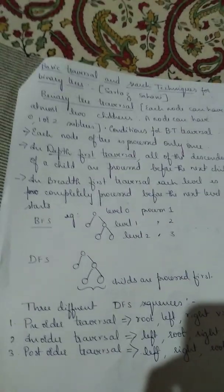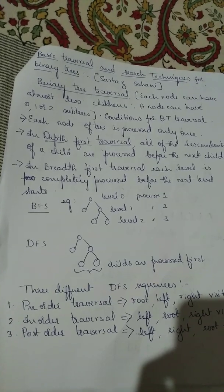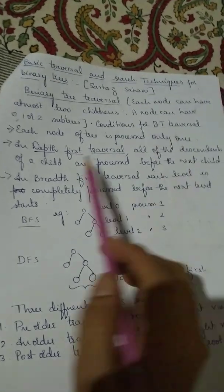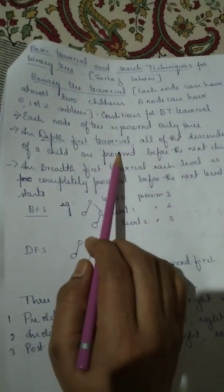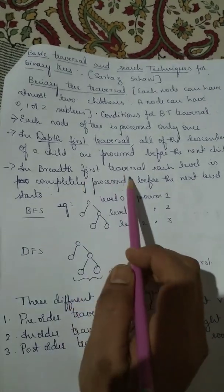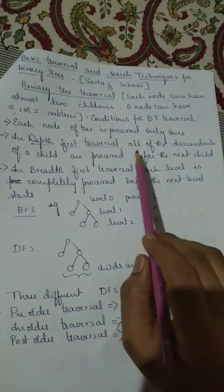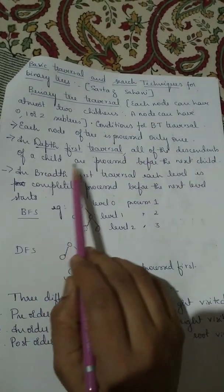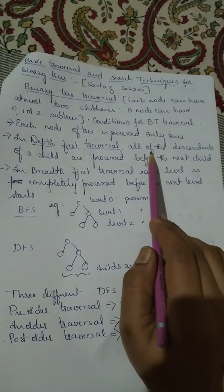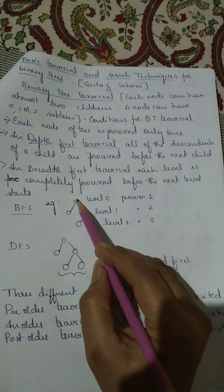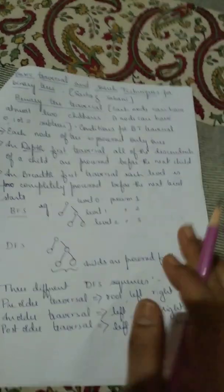Conditions for binary tree traversal: each node is processed only once. We can find depth first traversal and breadth first traversal. In depth first traversal, that is DFS, all descendants of a child are processed before the next child — meaning from the root node, traverse to the end of the leaf node, then only go to the next node.